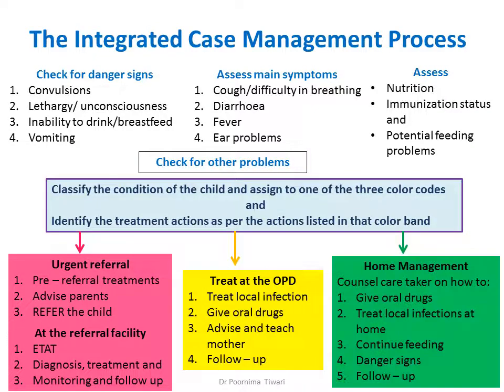If the child falls in the green band, it means the child can be managed at home. However, the child's caretaker — mostly the mother — must be counselled. She should be told how to give the oral drugs prescribed, with the first dose given at the center so the health worker can verify she is giving it properly. She should also be told how to treat local infections at home, advised to continue feeding, explained the danger signs so she can return immediately if needed, and told when to come for follow-up.